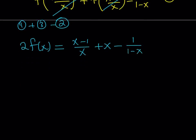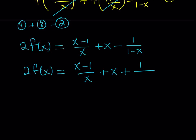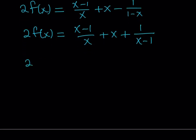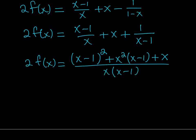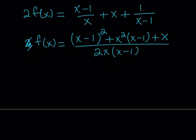Let's simplify the right-hand side. I'll rewrite -1/(1-x) as positive 1/(x-1) to make it easier. The common denominator is x(x-1). Multiplying through: (x-1) gets multiplied by (x-1) giving (x-1)², x gets multiplied by x(x-1) giving x²(x-1), and 1/(x-1) gets multiplied by x only. We can move the factor of 2 to the right side now.